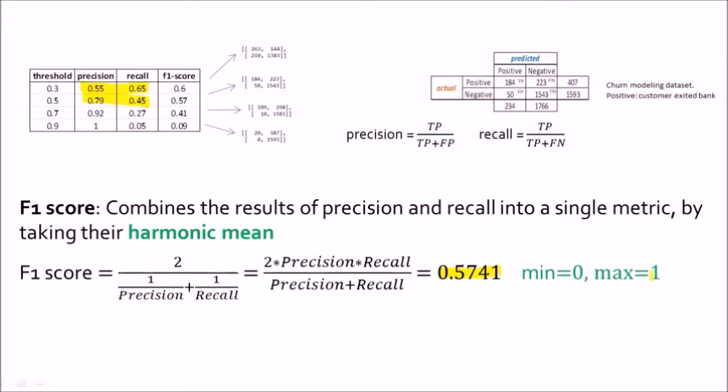Now the minimum value and maximum value, the maximum can be 1 of course because if we input precision is equal to 1 and recall is equal to 1, that is if we have no false positives and no false negatives, we would have precision and recall equal to 1. So our F1 score will be 1.